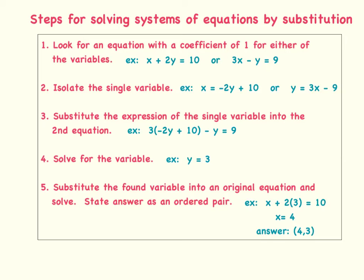Looking back at step two, I isolated x and I got this expression: x is equal to negative 2y plus 10. Well, if x is equal to this, then it means that I could substitute this expression for the x value in the other equation. So it will look like this. I start out with 3, which is the first coefficient in the other equation, and instead of saying 3 times x, I say 3 times this expression that's equal to x. So 3 times negative 2y plus 10. Then I bring down the rest of that original equation: minus y equals 9.